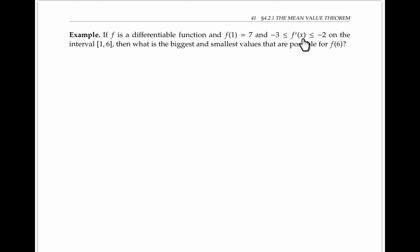In this example, we're told that F(1) is 7 and that the derivative of F is bounded between negative 3 and negative 2 on the interval [1, 6]. We're asked to find the biggest and smallest values that F(6) could possibly be. The mean value theorem gives us one way of relating the derivative of the function to its values on the endpoints of the interval.